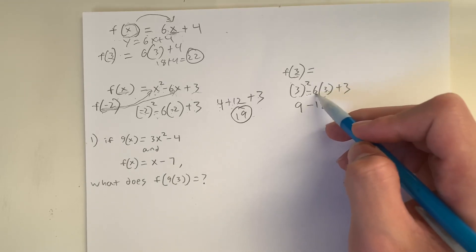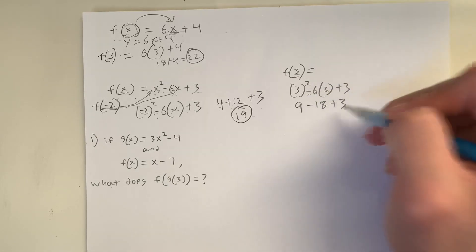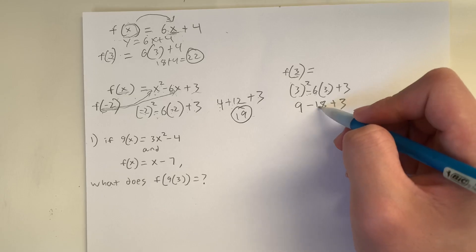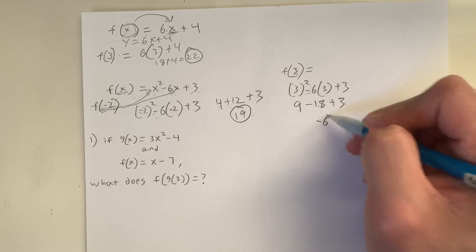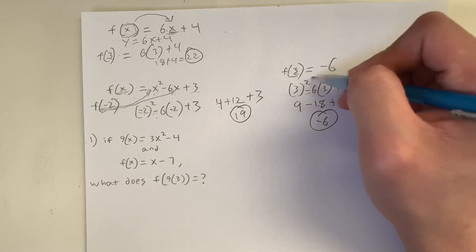Negative 6 times 3 is negative 18. Remember to keep this negative in front of this negative 6 by multiplying. And we add 3 to that. 9 minus 18 is negative 9. Negative 9 plus 3 is negative 6. So the value of f(3) is equal to negative 6.